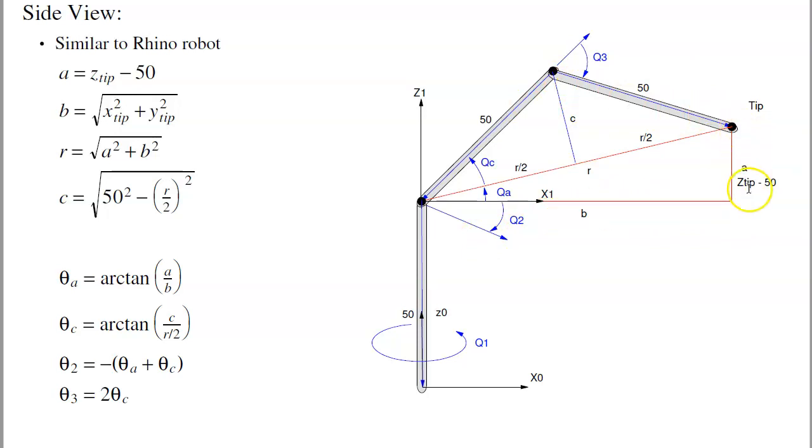I've got this parameter b. This is the tip minus 50, offset of the base. There's r. Again, same equations that we did for the Rhino Robot, finds the angles theta1, theta2, theta3. And theta2 is actually positives going down, so going up is negative.